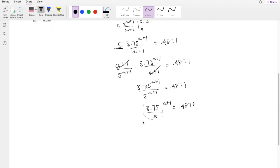You can do a little natural log trick, so I'm going to take the natural log of both sides to bring this (a+1) down. So that's natural log of (3.75 divided by 5) times (a+1) here, is equal to 0.4871.